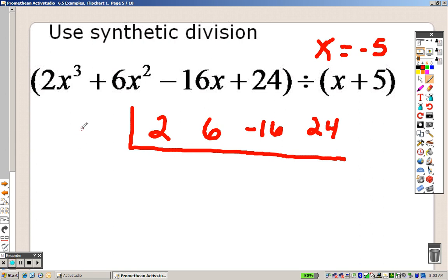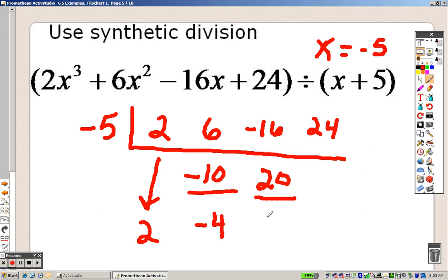And now over here goes a negative 5. So just like anything else, I bring down the first term, which is a 2. If you remember in 6.2 we multiply, so 2 times negative 5 is negative 10. I add them together to get negative 4. Negative 4 times negative 5 is positive 20. I add those together to get 4.